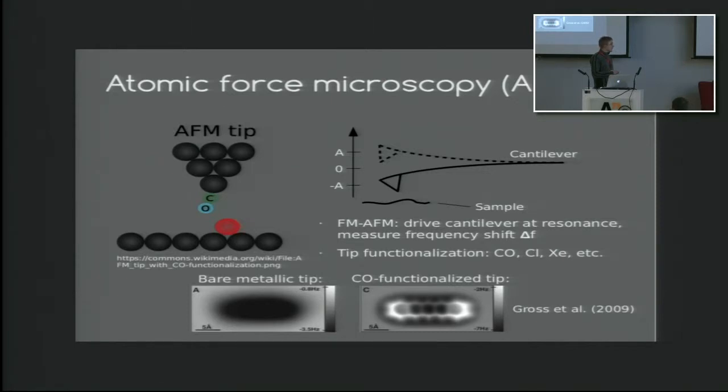A typical method used is this frequency modulation AFM, where we drive this cantilever at some frequency and some amplitude, and then we measure the frequency shift that is caused by the force interaction between the sample and the cantilever. And one other important aspect about this method is this idea of tip functionalization, where we put some molecule like CO, chlorine, or xenon to the tip of the AFM device. And this flexibility of this probe particle is actually what allows this really high resolution that we observe in these images.